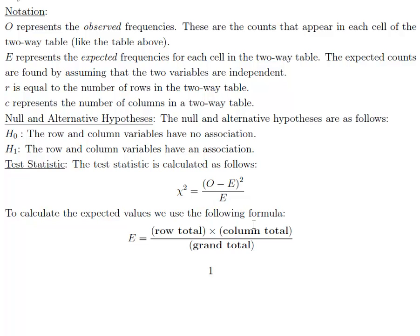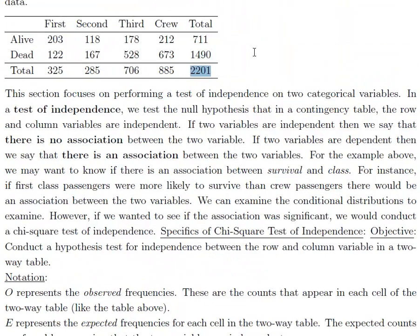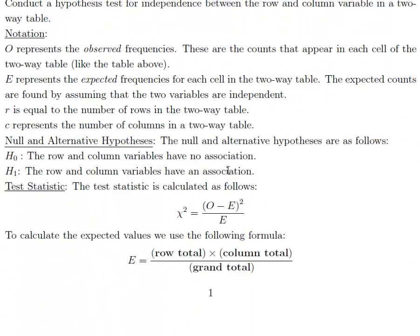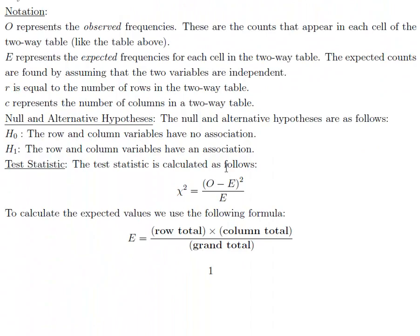The notation for the test is pretty easy. The letter O represents the observed counts. Those are the numbers that are in this table. You get that straight from the data. The expected values will be represented with the letter E. Those would be what would be expected if there's no association between the two variables. So mathematically it's easy to figure out what the expected value is under the null hypothesis, assuming that the two variables are not associated in any fashion.